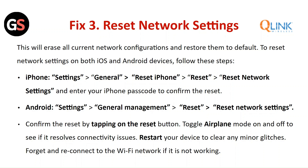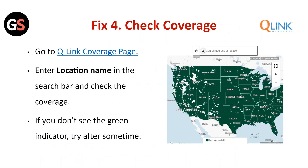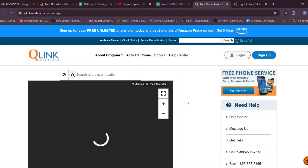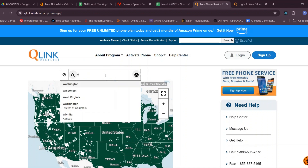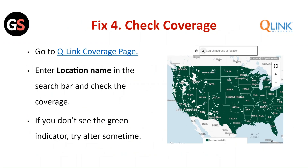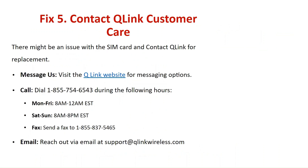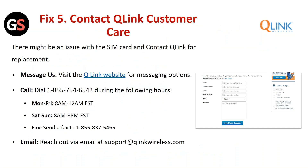Fix four: Check the coverage. Go to the Qlink coverage page, enter your location name in the search bar, and check the coverage. If you do not see the green indicator, try again after some time.